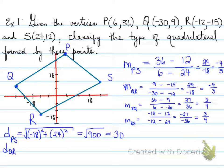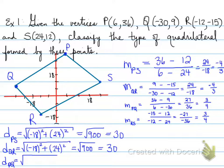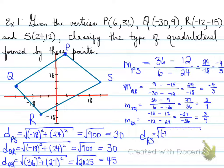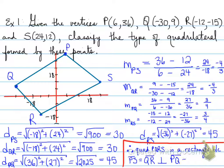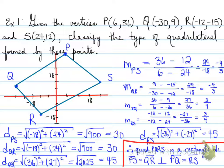Calculating QR, PQ, and RS similarly, we find that the opposite sides are equal in length, but not all four sides are equal to each other. Therefore, quadrilateral PQRS is a rectangle because the opposite sides are parallel and equal, adjacent sides are perpendicular, giving 90-degree angles.